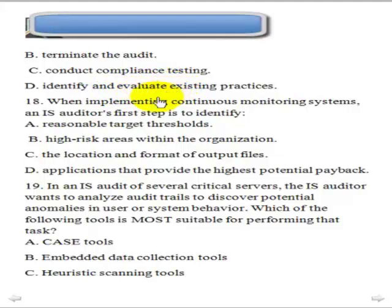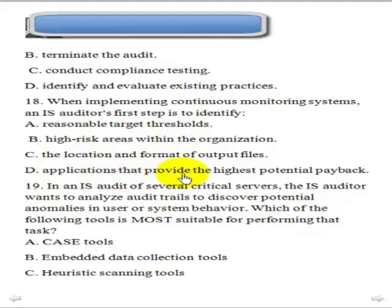Question 18: When implementing a continuous monitoring system, the IS auditor's first step is to identify high-risk areas within the organization. The answer is B — always focus on the areas of highest risk.